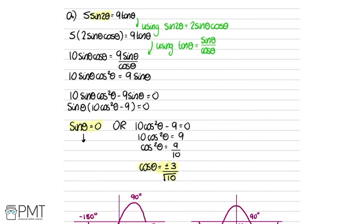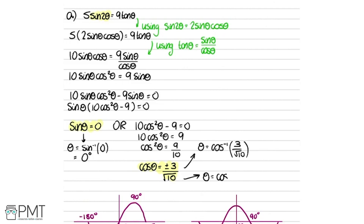Starting with sinθ = 0: θ = sin⁻¹(0) = 0°. Now working with cosθ: θ = cos⁻¹(3/√10) or θ = cos⁻¹(−3/√10). Putting these into the calculator and rounding to one decimal place gives 18.4° and 161.6°.